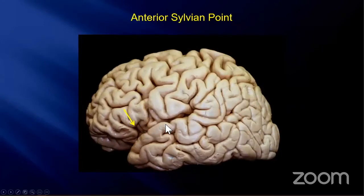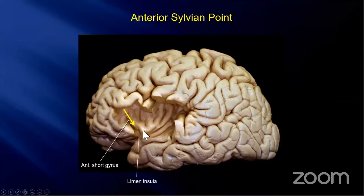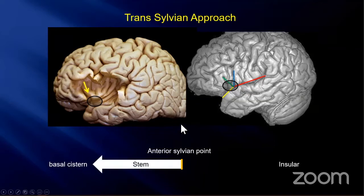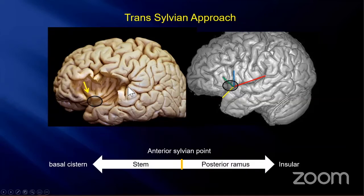The deep side of the anterior sylvian point corresponds to the anterior short gyrus and limen insulae. So when we approach the basal system, the stem should be opened. On the other hand, when you need to approach the insular area, the posterior ramus should be opened.